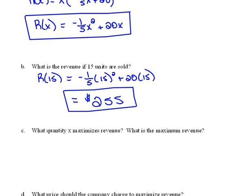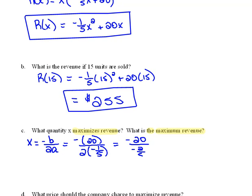Now the next part is asking us to maximize this revenue. So it's asking us, how many units do we have to sell in order to maximize the revenue? And then what is that maximum revenue? Well, remember we have that formula that says X equals negative B over 2A. So that would be negative 20 divided by 2 times the A value, which is negative 1 fifth. So that would be negative 20 divided by negative 2 fifths, which is 50.